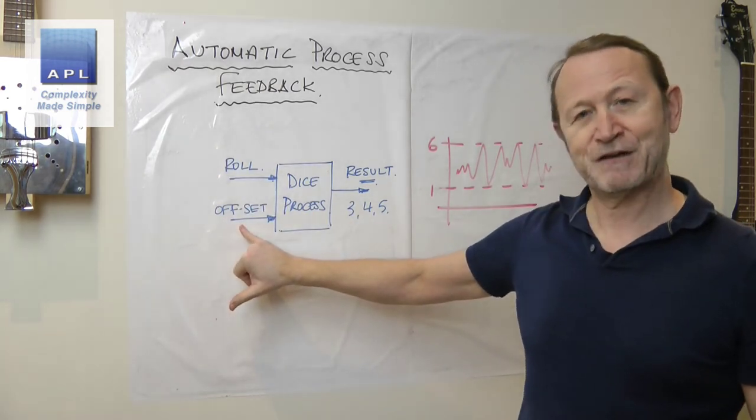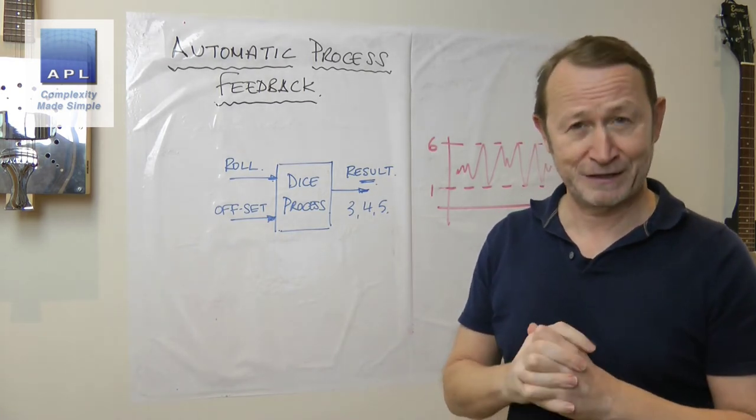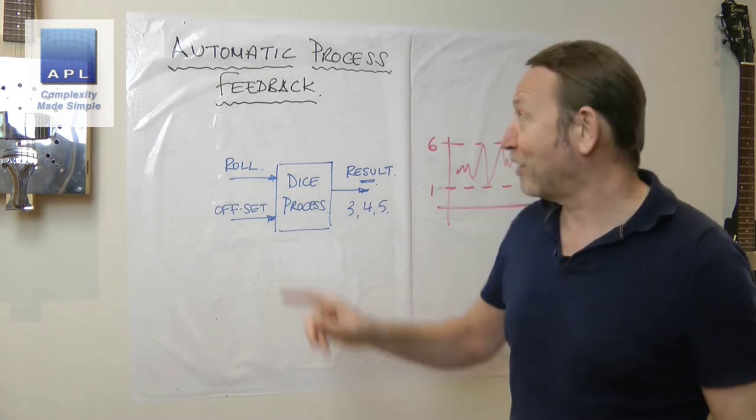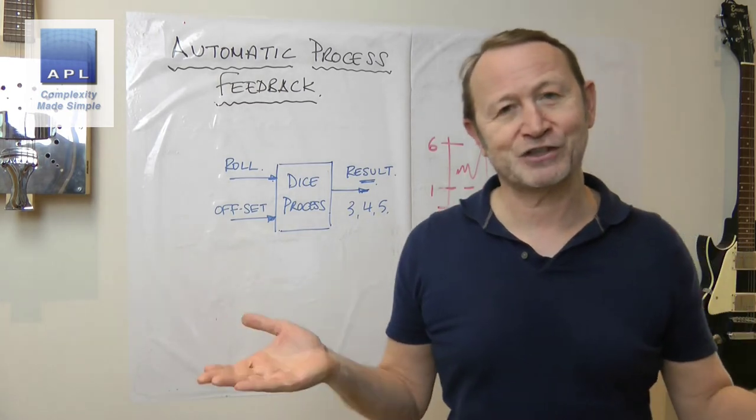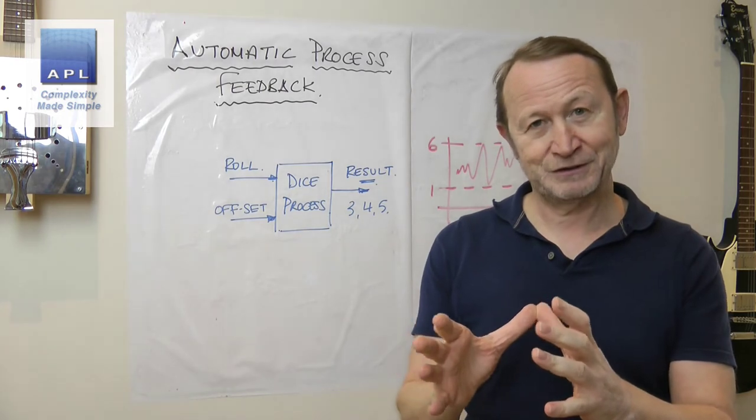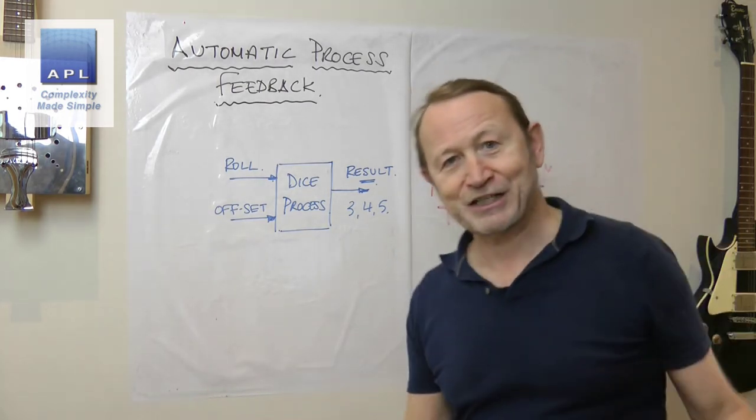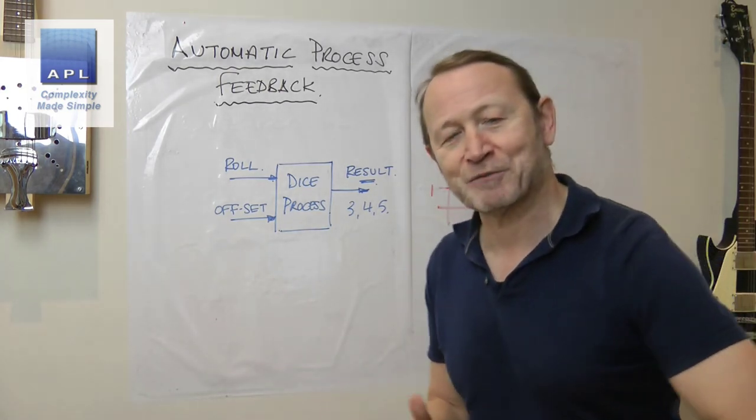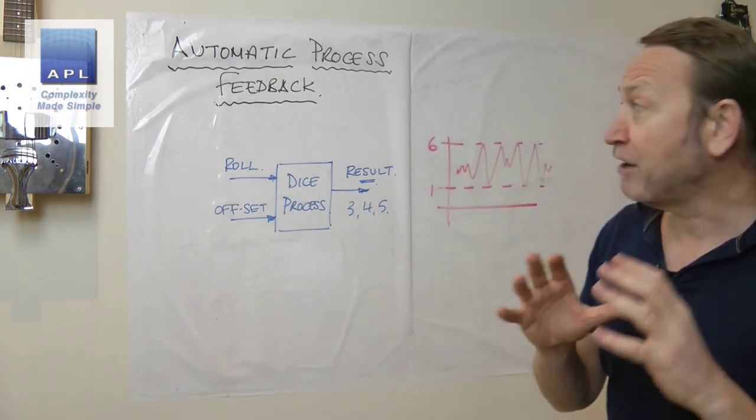But now someone's asking me the question, shouldn't we have an automatic feedback system? Well, if I don't want the operator to touch it, I don't want to give it to a robot and now make the bloody adjustment automatic, because now the robot is going to adjust every time. You go bang, bang, bang, make the process so much worse.